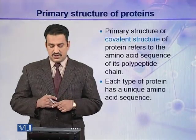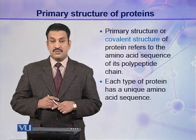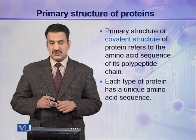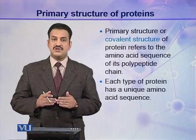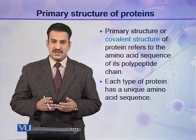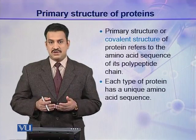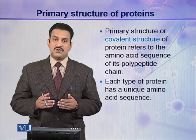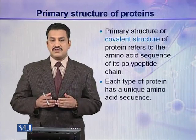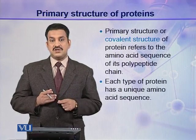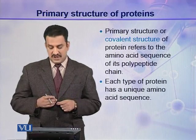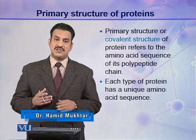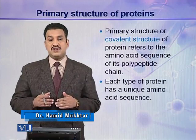Primary structure is also called the covalent structure of proteins, and it refers to the amino acid sequence of its polypeptide chain. There are thousands of proteins present in nature, and all proteins are different from each other. They differ only on the basis of their amino acid sequence — every protein has a unique amino acid sequence, and if this sequence is changed, the protein is entirely changed.